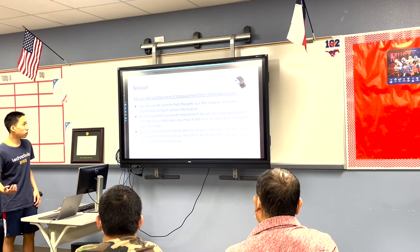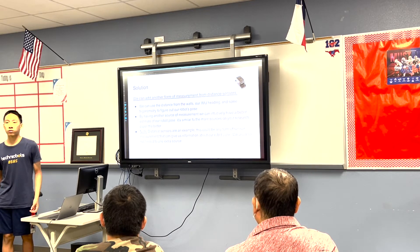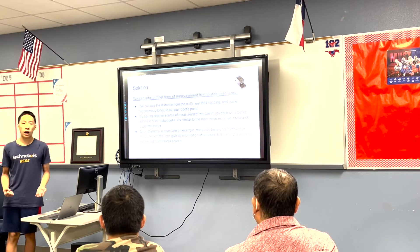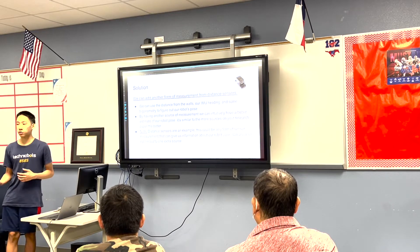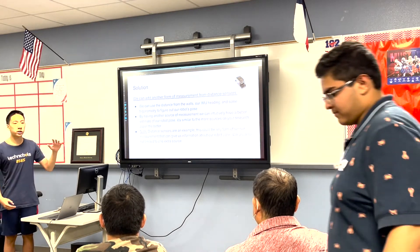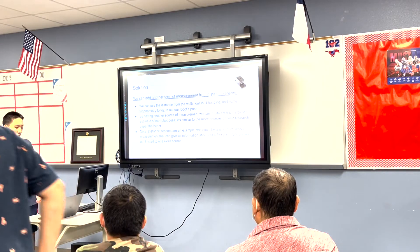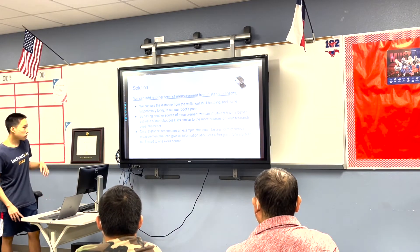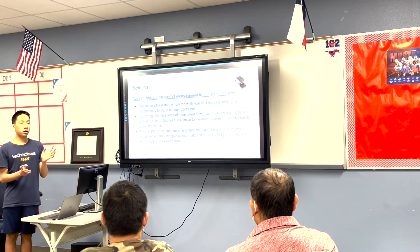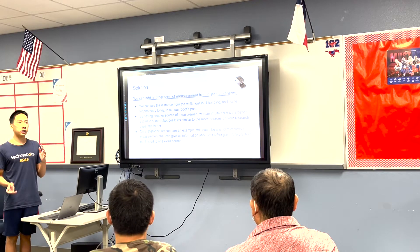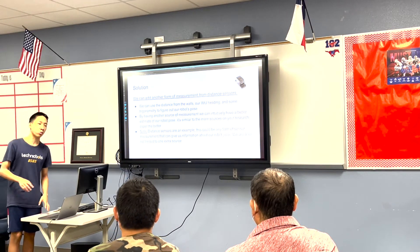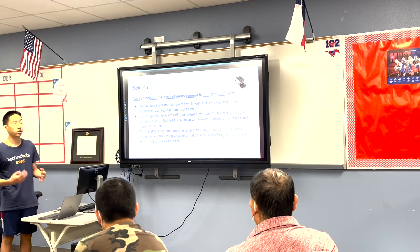We can solve this by simply taking another form of measurement. If you were driving down a highway and using your odometer to find out how far you've traveled, you could also use road signs as another way. So we're going to use distance sensors — point them at the walls and use a little trigonometry to figure out where our robot is on the field.